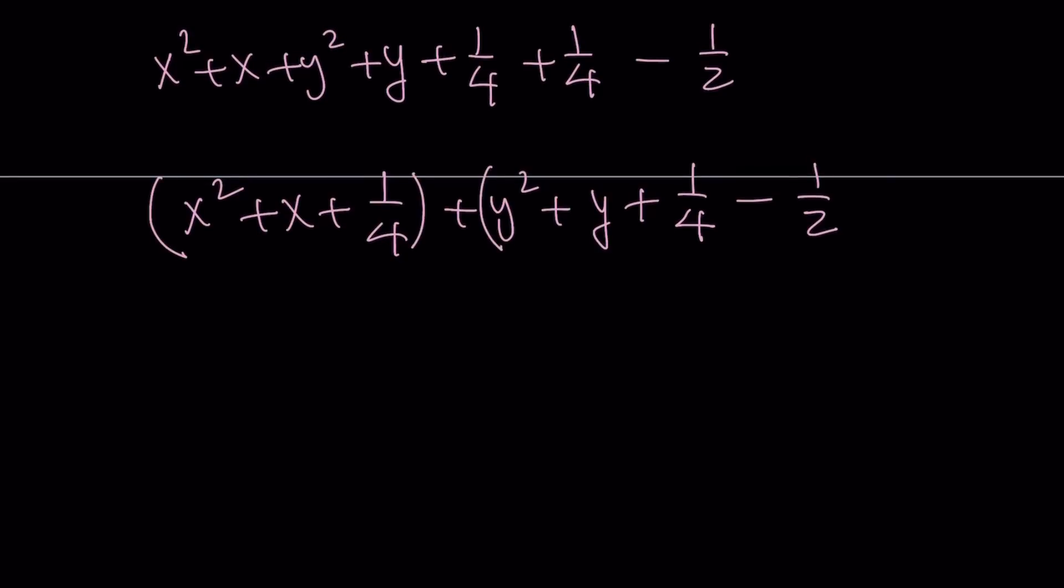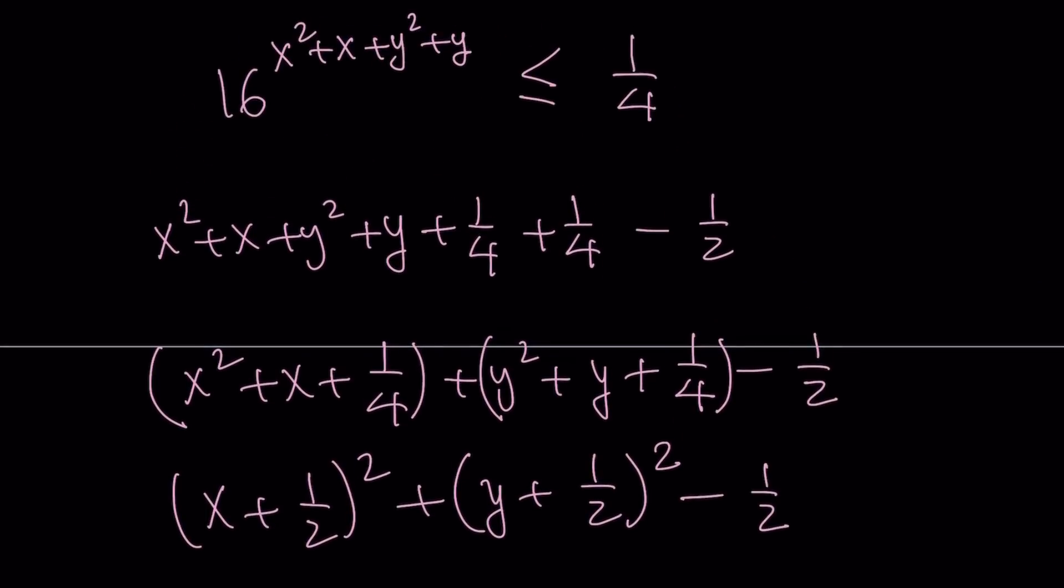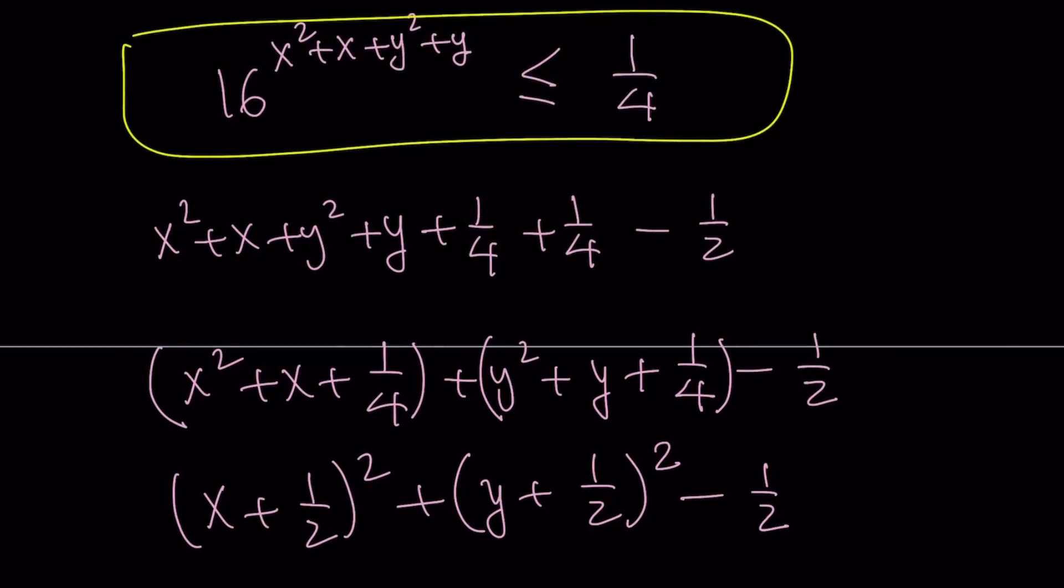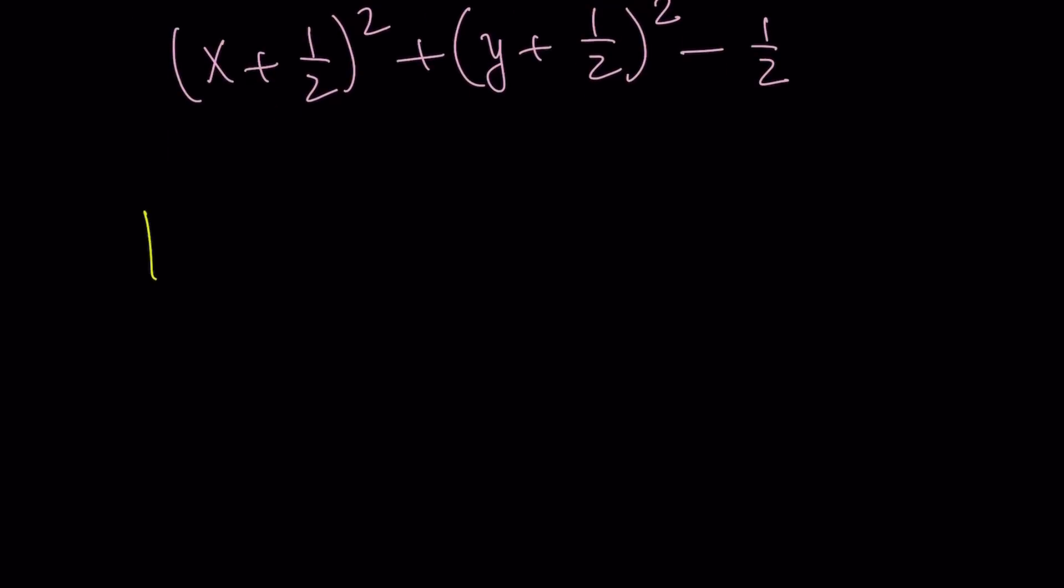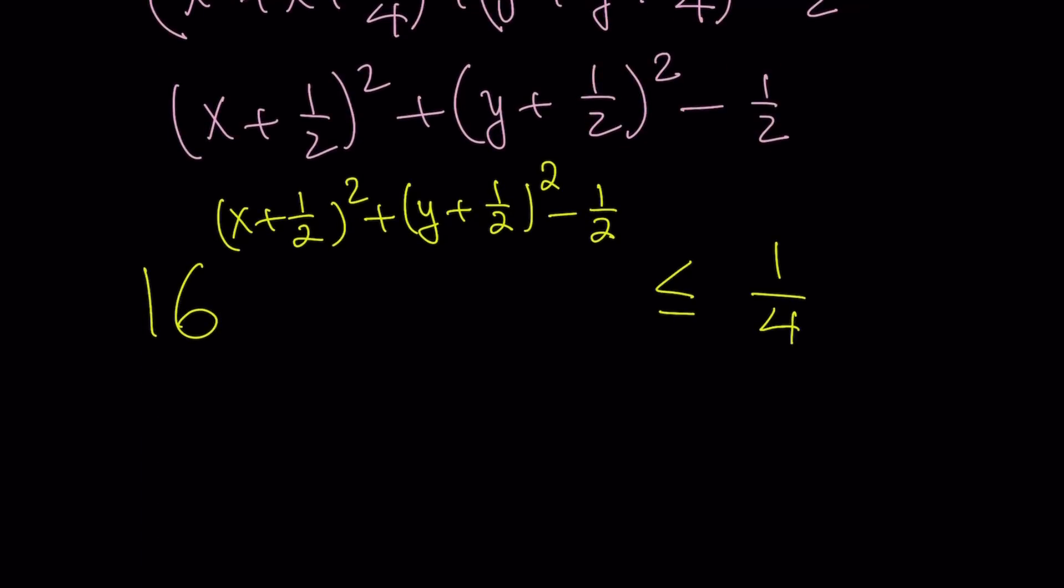So you get the following. Now, notice that these are perfect squares. And that's perfect. From here, I get x plus 1 half quantity squared plus y plus 1 half quantity squared minus 1 half. Awesome. So I was able to write the exponent as a sum of 2 squares minus something. That's okay. We'll deal with that. But let's go ahead and substitute that here. Let's go ahead and substitute it into our expression. We're almost there.